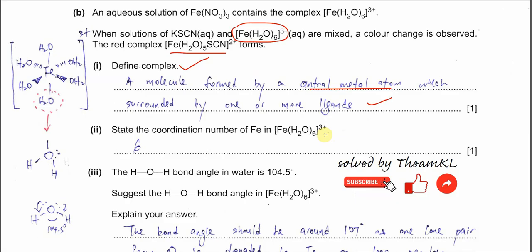Part B2: state the coordination number of the iron ion in hexaaquairon(III). The coordination number depends on how many dative bonds are formed. There are six dative bonds in this complex — one to each water ligand — so the coordination number is six.